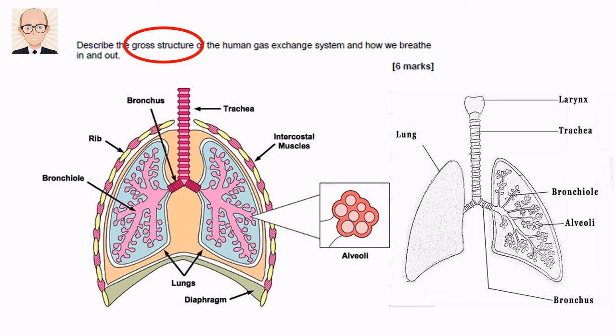In that case, you just need to describe the main parts in order, starting with the trachea which extends down through the abdominal cavity before branching into two bronchi, which each branch into smaller and smaller bronchioles before ending in tiny alveoli. We're only asked for the gross structure, not the fine structure, so we don't need to talk about cartilage rings, pleural membranes, alveolar blood capillaries, or any of that.